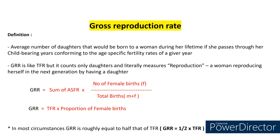So the formula for GRR will become: GRR is equal to sum of age-specific fertility rates multiplied by proportion of female births — that means number of female births F divided by total births, male plus female. Or in terms of TFR: GRR is equal to TFR multiplied by proportion of female births, which is number of females divided by total births. So in most circumstances, GRR is roughly equal to half that of TFR.